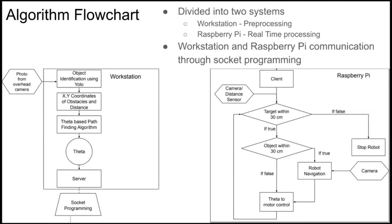For example, the workstation was completely in charge of taking the photo from the overhead camera, identifying all the obstacles, objects, targets, and the robot on the map using the YOLO object identification algorithm. From there, it would determine the x and y coordinates of the obstacles, the targets, and the robot. And from there, the theta value would then be calculated. The theta value would then be sent to a server and the server was actually hosted within the workstation. And the workstation would basically then just send the theta value to the client, or in this case, the Raspberry Pi using socket programming.